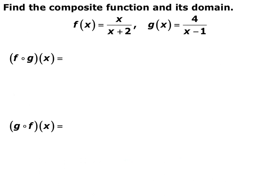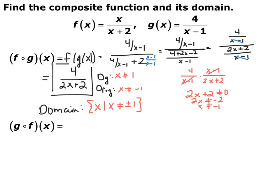Sometimes these can be a little trickier, especially with rational functions. We have a new f of x and g of x, both rational functions, and we want to find f composed with g of x and its domain. Pause the video and find f composed with g and its domain — make sure you simplify it all the way down to one rational function. So f composed with g means f of g of x. Every time I see an x in f, I replace it with the whole function 4 over x minus 1. You end up with 4 over x minus 1, divided by 4 over x minus 1 plus 2. To simplify this denominator, you need a common denominator, so multiply by x minus 1 over x minus 1.